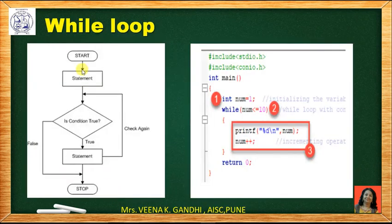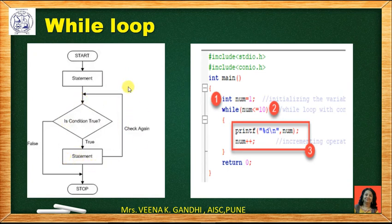Let's see more detail using a flowchart. First you initialize the statement, then check the condition. If the condition is true, then the body of the statement will be executed, and then again you check the condition. This loop will be executed until the condition becomes false. When the condition is false, the loop will be terminated and the program will stop.